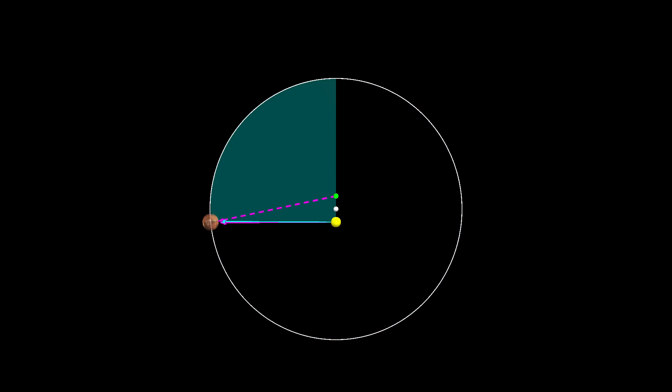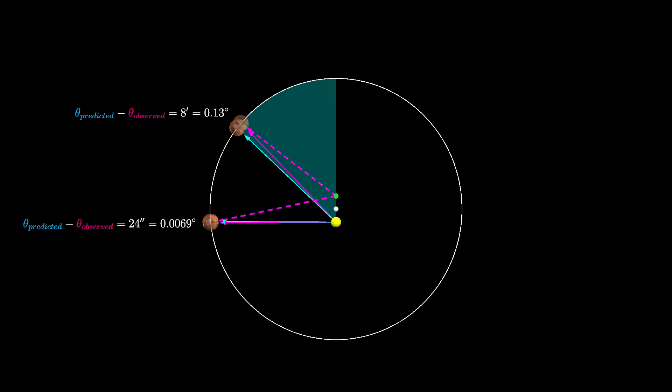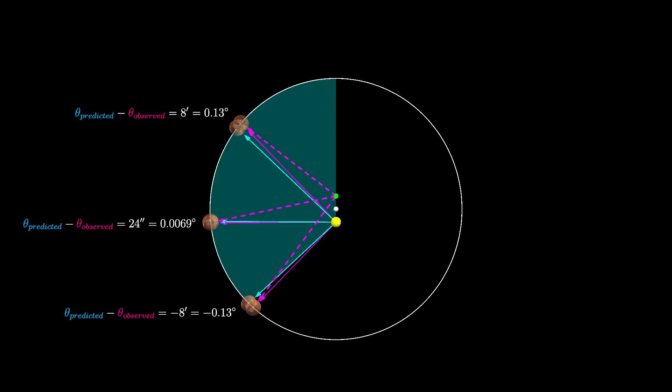At an angle of 90 degrees, the equal area approach fared well, yielding an error of only 24 arc seconds. While at 45 degrees, Kepler's equal area approach moved the planet too quickly, and at 135 degrees too slowly, each with an error of around 8 arc minutes.